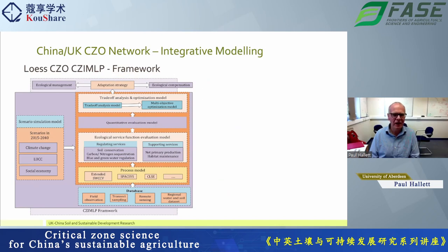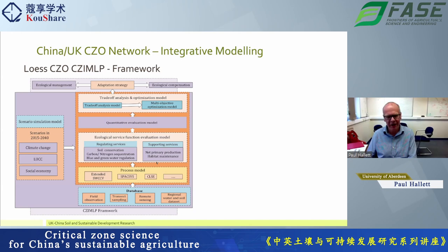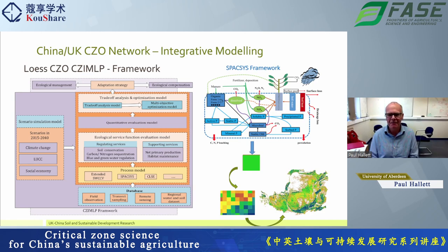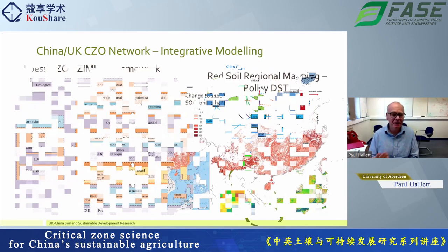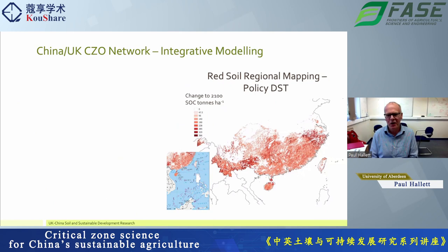Within the first phase of the critical zone project, the Loess Plateau team came up with a modeling framework that brought together a range of different models. It was aimed primarily at policy people as a way to look at optimizing land use and practices to minimize environmental risks. One of these process models was SPAXIS — a model of nutrient cycling and crop productivity — which allowed them to look at where nutrient use efficiency could be improved in the region. We also applied different modeling within the red soil region: the COS model, developed at the University of Aberdeen, to look at soil organic carbon storage if there was a shift to afforestation or planting of trees.